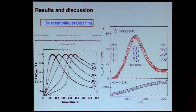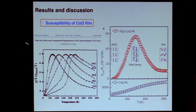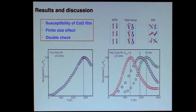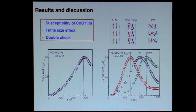Looking at reference data on the susceptibility of very thin cobalt oxide films, the two curves look pretty similar, so we guessed that maybe the peak is related to the Néel temperature of this material. We then changed the thickness of cobalt oxide and found that the peak shifts consistently with thickness, which is consistent with this behavior. We also changed cobalt oxide to nickel oxide — a very similar compound but with a much higher Néel temperature — and when controlling the thickness of the film, we see very similar behavior.